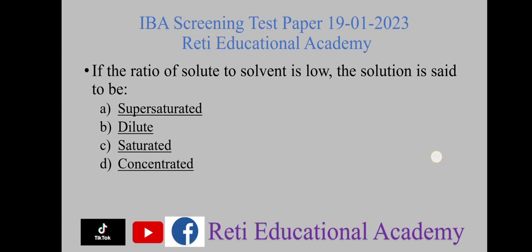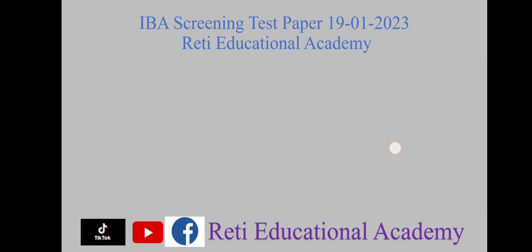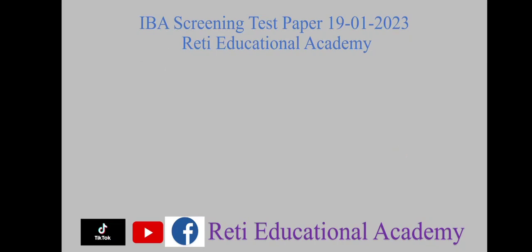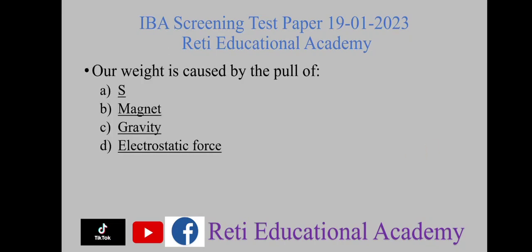Question number five: when two surfaces move or slide over each other, they experience friction. Question number six: our weight is caused by the pull of gravity.